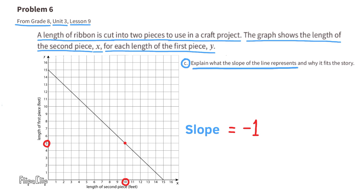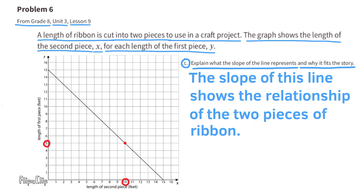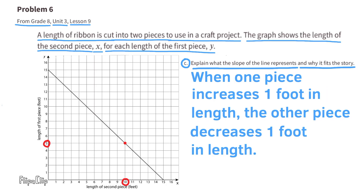The slope of this line shows the relationship of the two pieces of ribbon. When one piece increases 1 foot in length, the other piece decreases 1 foot in length.